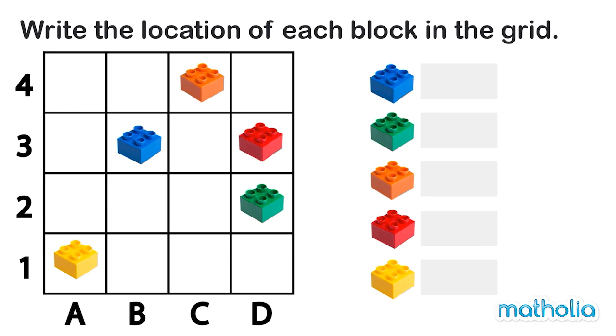Write the location of each block in the grid. We can see in the grid there are different colored blocks in different positions. The first block we need to find is the blue block.